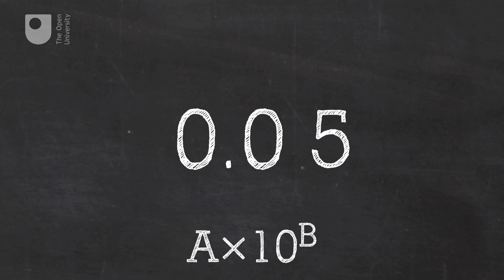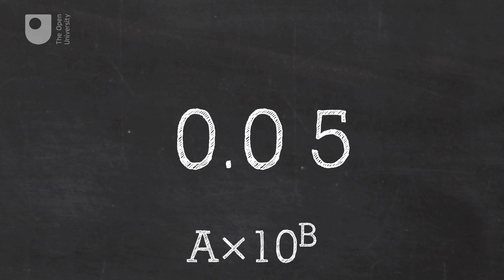Small numbers can be written in a very similar way. Let's start with the number 0.05. The only digit greater than zero is the five at the right-hand end. This means the decimal point needs to hop over digits to the right until the five is in front of it — hopping over two numbers. The number b is two, but because we've moved towards the right we're moving towards smaller numbers, so a minus sign is required, making it minus two. Removing all the zeros and the leading zero before the decimal, we're left with the number five as our value a.